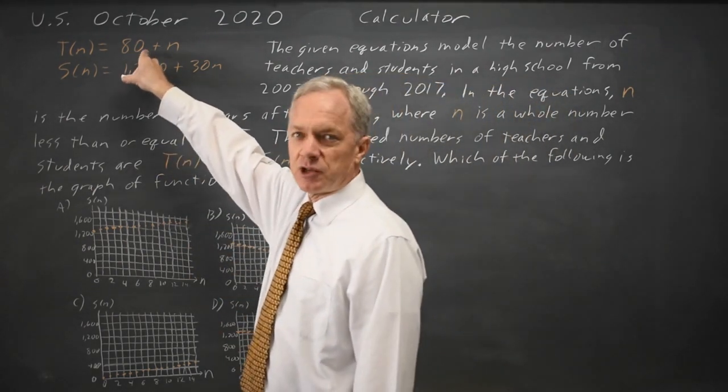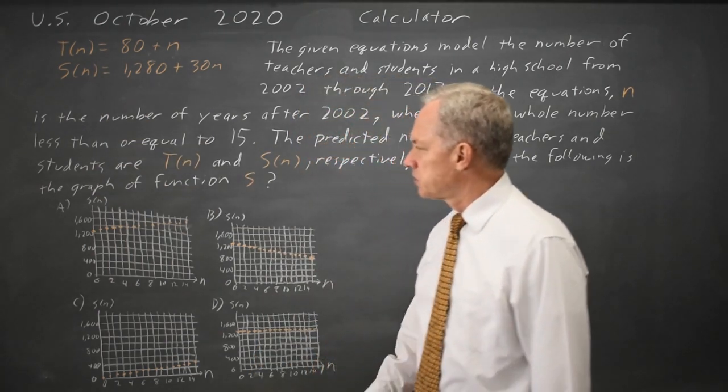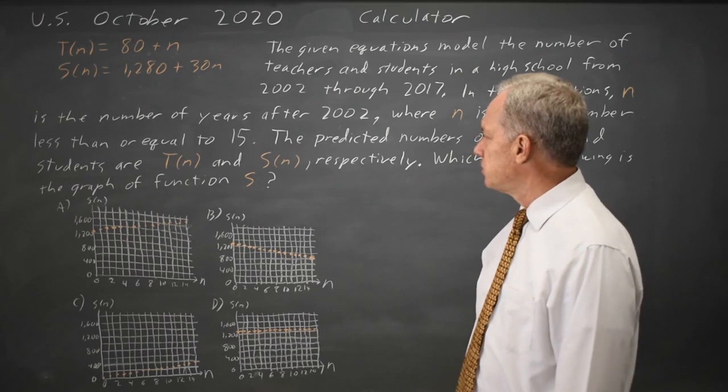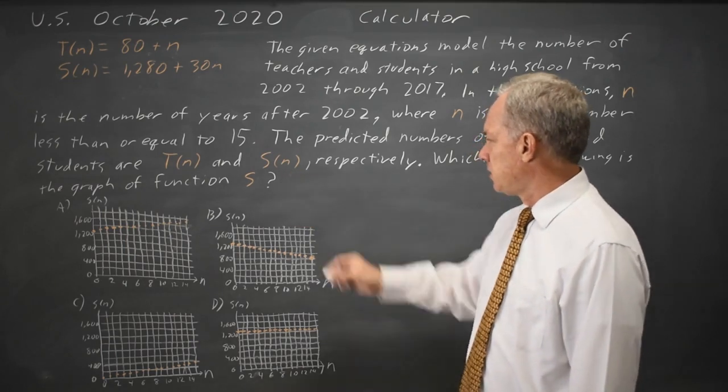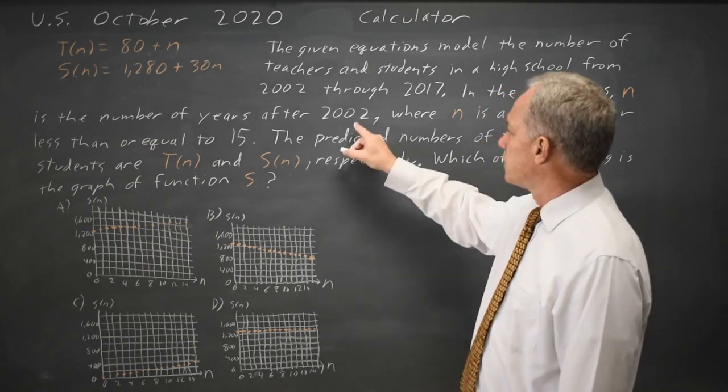We have a function for the number of teachers and for the number of students in a school and College Board is asking which of these graphs could be the number of students s of n in a school where n is the number of years since 2002.